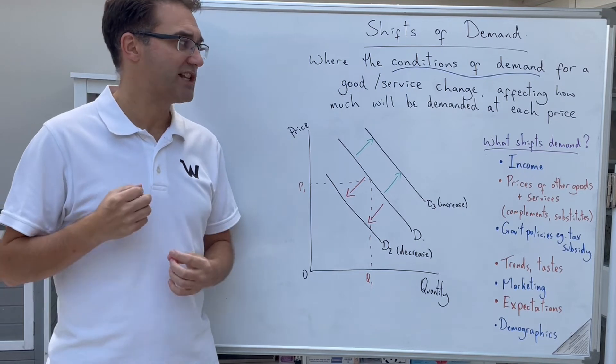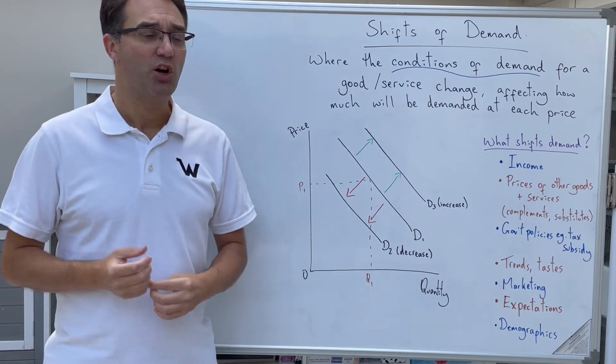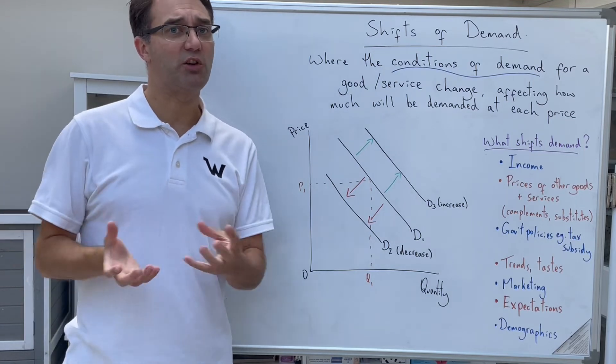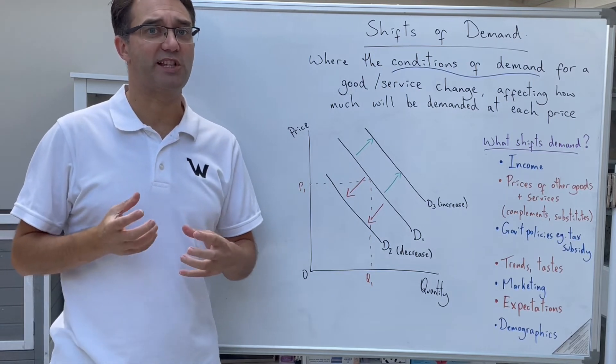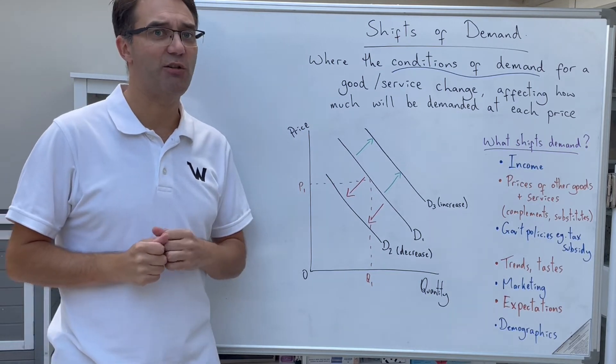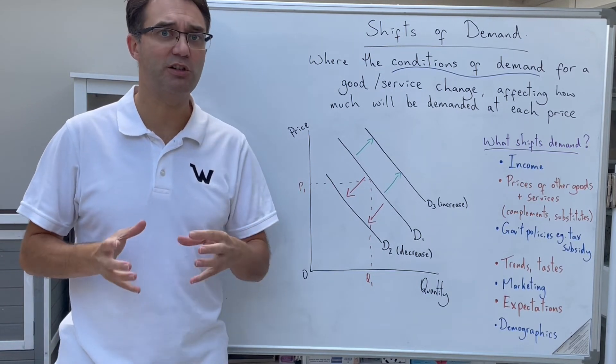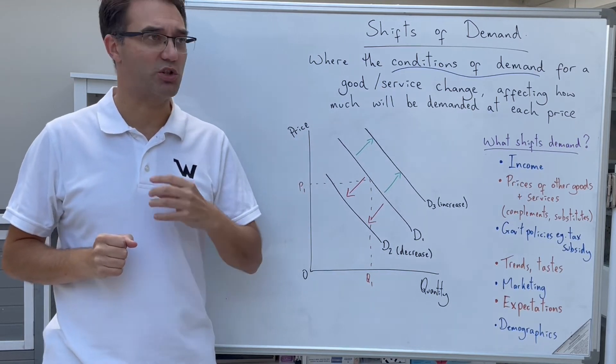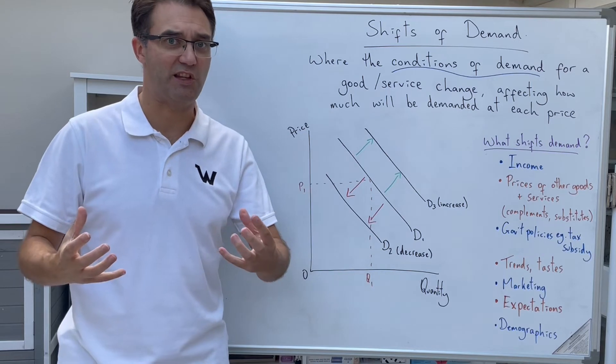Another factor is the price of other goods and services. Although it's not the price of this good or service changing, the price of other goods and services changing will influence how much people buy. Two terms you need to know here are a complement good, where two goods work together, or a substitute, which is where two goods can be used one instead of the other.